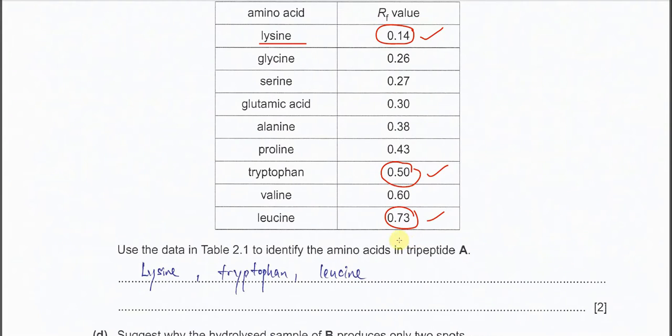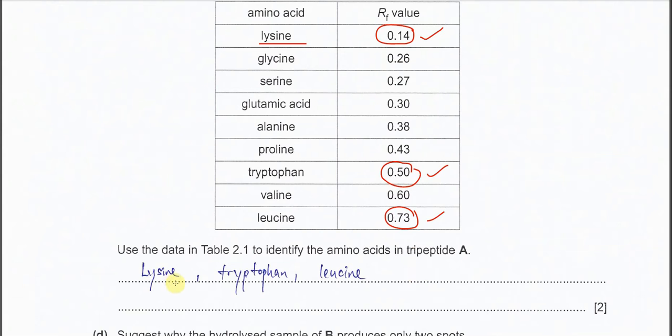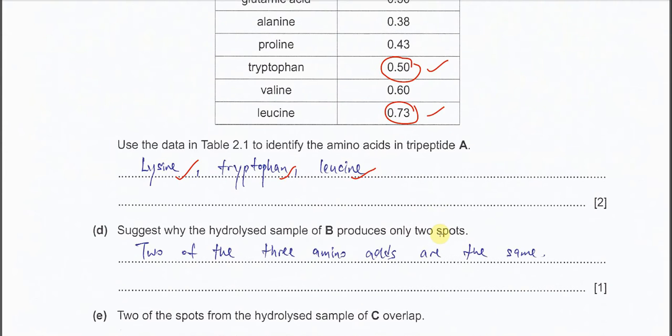Okay, so this one is done. Use data in the table 2.1. Identify the amino acid in the tripeptide A. So I told you already. These are the three amino acids inside the A. All right. So all from the RF value.